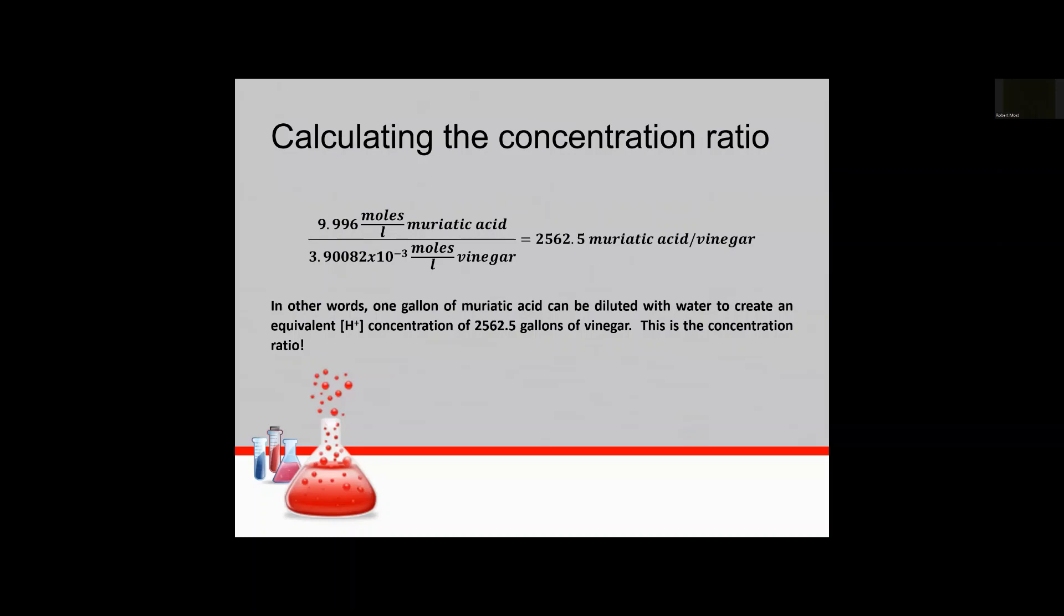So if we kind of flip this on its head we can say that it doesn't take a heck of a lot of muriatic acid just a feeble amount in a gallon of water to get the equivalent hydrogen ion concentration of vinegar. So you can go a long way with one gallon of muriatic acid if your goal is to just get the equivalent concentration of vinegar. So let's kind of flip this on its head and figure out how much that is.